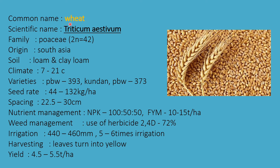The first cereal crop is wheat. The scientific name is Triticum aestivum, family Poaceae. All cereal crops belong to the Poaceae family. The chromosome number is 2n = 42 and the origin is South Asia. The soil required is loamy to clay loamy, and the climate is 7 to 21 degrees Celsius. Wheat is mainly grown in the winter season in cool climate.